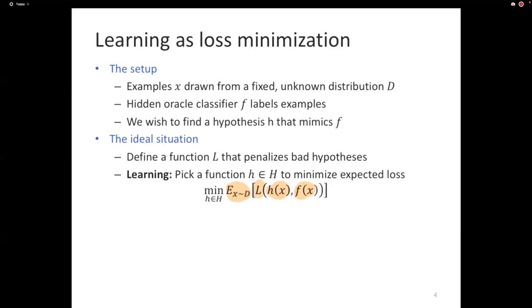Yes, we don't know this distribution D. The distribution D is unknown. The instance space might be infinitely large. How can we possibly compute this expectation? If we cannot compute the expectation, we cannot minimize it. So this is, in some sense, a problem that cannot be solved. It just shows, here is a problem I would like to solve.